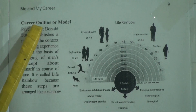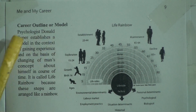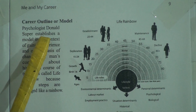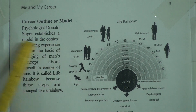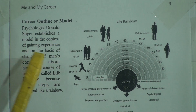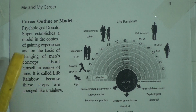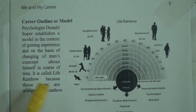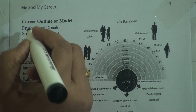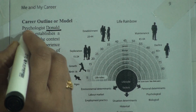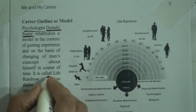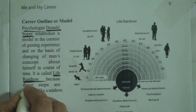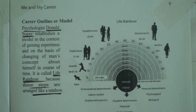Career outline or model: psychologist Donald Super establishes a model in the context of gaining experience and on the basis of changing of man's concept about himself in course of time. It is called the Life Rainbow, because the stages are arranged like a rainbow.